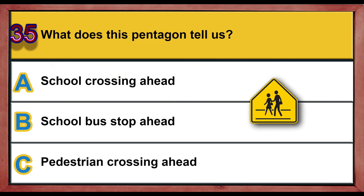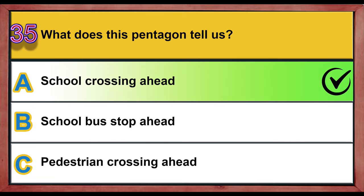Question 35. What does this pentagon tell us? A. School crossing ahead. B. School bus stop ahead. C. Pedestrian crossing ahead. Correct answer is A: School crossing ahead.